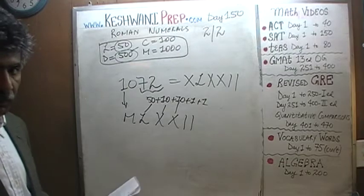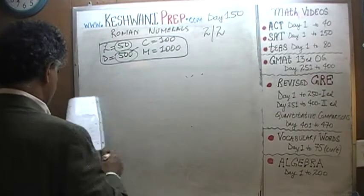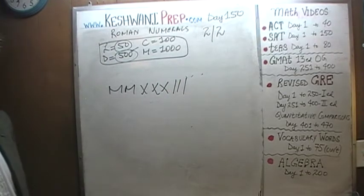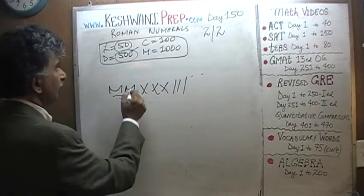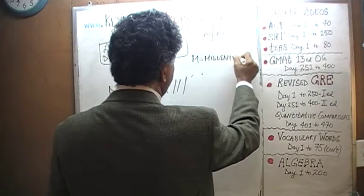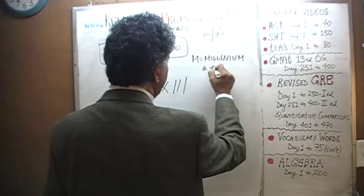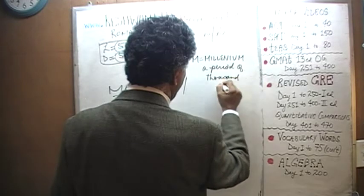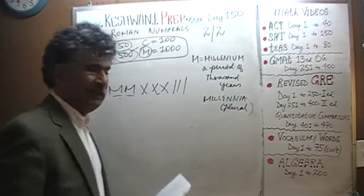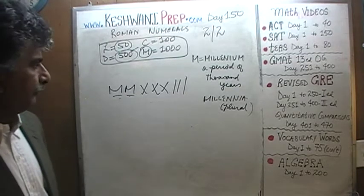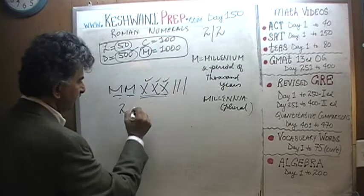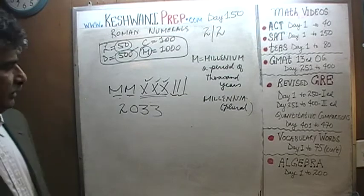Next one — you tell me what this number is: MMXXXIII. It is actually very simple, if an awkward way of writing it. M plus M is one thousand plus one thousand — that's two thousand. M stands for millennium, meaning a period of a thousand years. The plural is millennia. So MM is two thousand. Then XXX is thirty — ten plus ten plus ten — and then III is three. So this is two thousand and thirty-three.